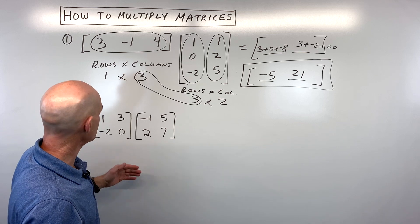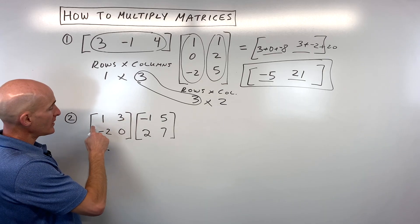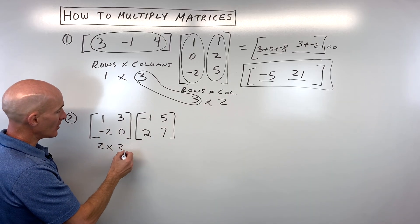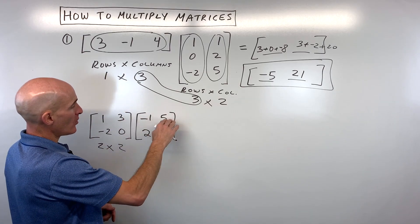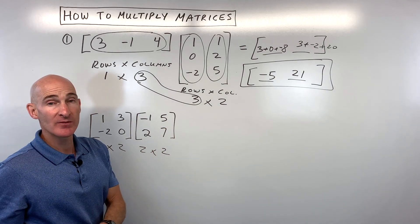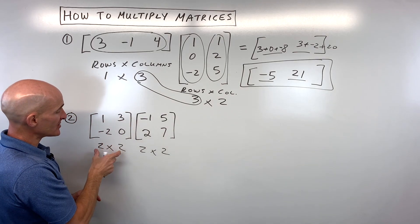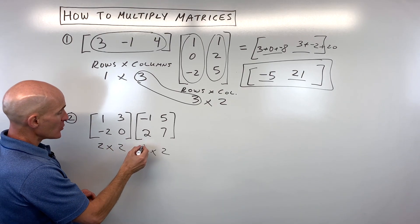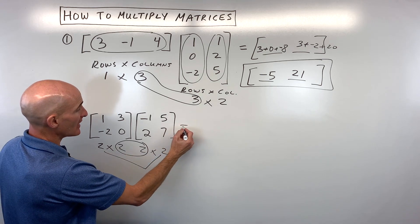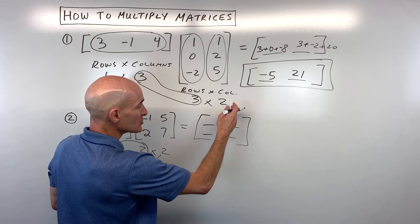Let's take a look at another example. For number two, what are the dimensions of these two matrices? We've got two rows and two columns — that's a two by two. Same thing with the other matrix: two rows and two columns. We call these square matrices because they have the same number of rows and columns. The inner dimensions match, and we end up with a two by two matrix — two rows and two columns.